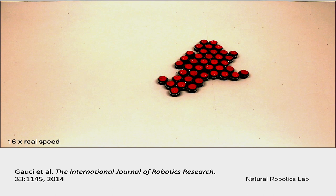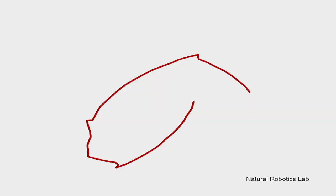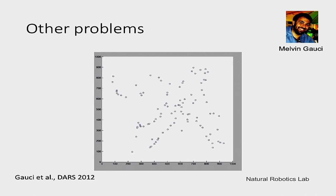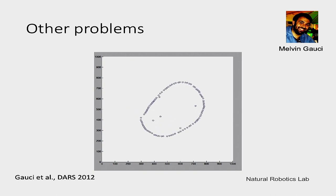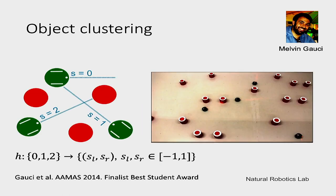In the second part of the talk, we talk about machine learning and will come back to this particular behavior. But first, there are many other interesting problems — like circle formation — that can be used with the same framework. Another problem is clustering not the robots themselves but other objects. These are passive objects that don't move, but if you program robots using our framework they start clustering them. In this case, the robot doesn't have a binary sensor but a ternary one.